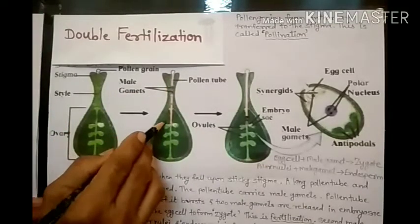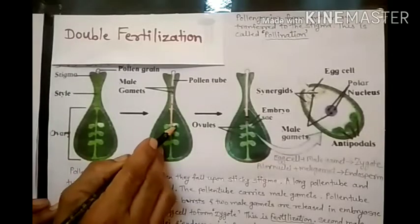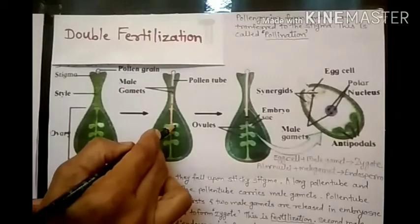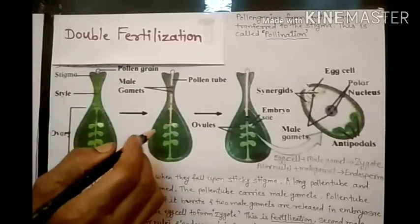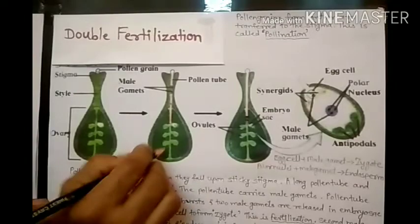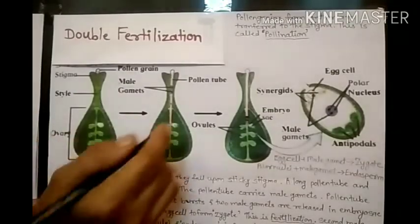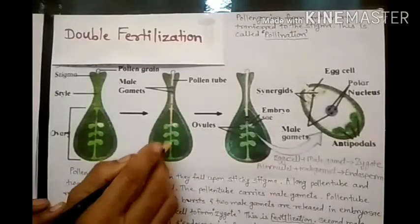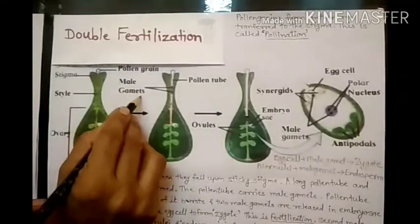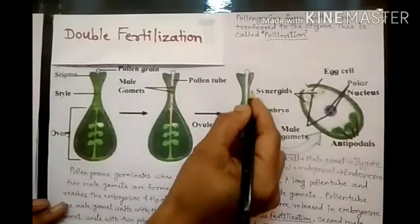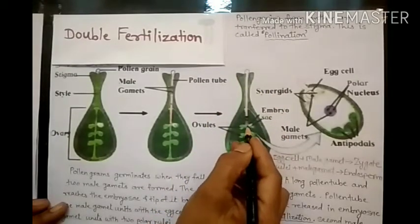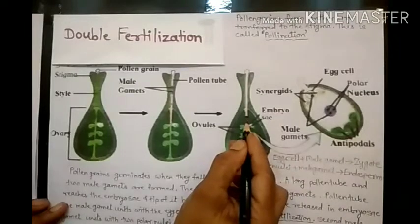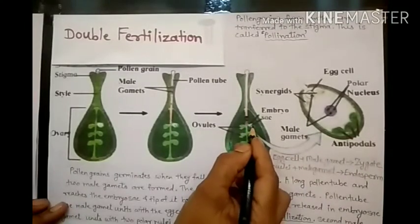This pollen tube reaches the embryo sac, and at the tip the pollen tube bursts. The pollen tube bursts at the embryo sac and the male gametes enter into the embryo sac.